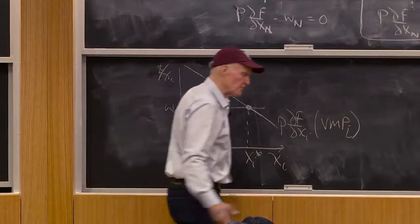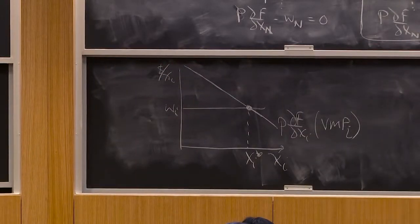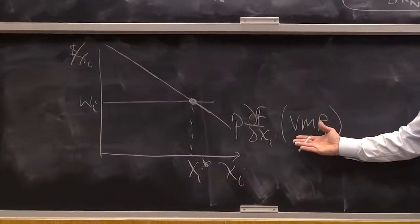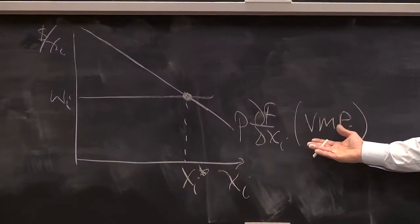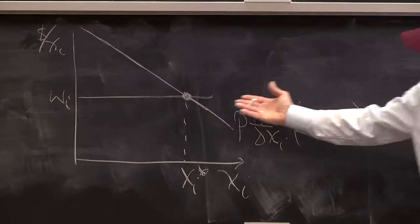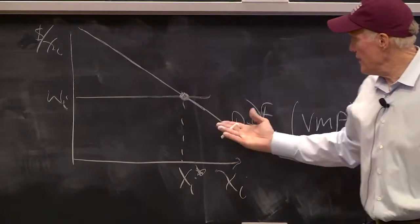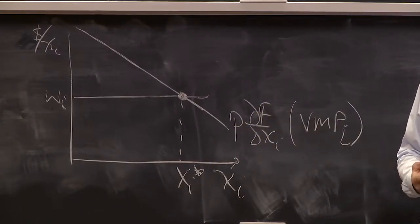That's really the same first order condition we had before, this equation, this equality between marginal value and marginal cost. So the marginal cost of the input is wi. That's how much you pay for another use of input. And this is the value marginal product schedule.